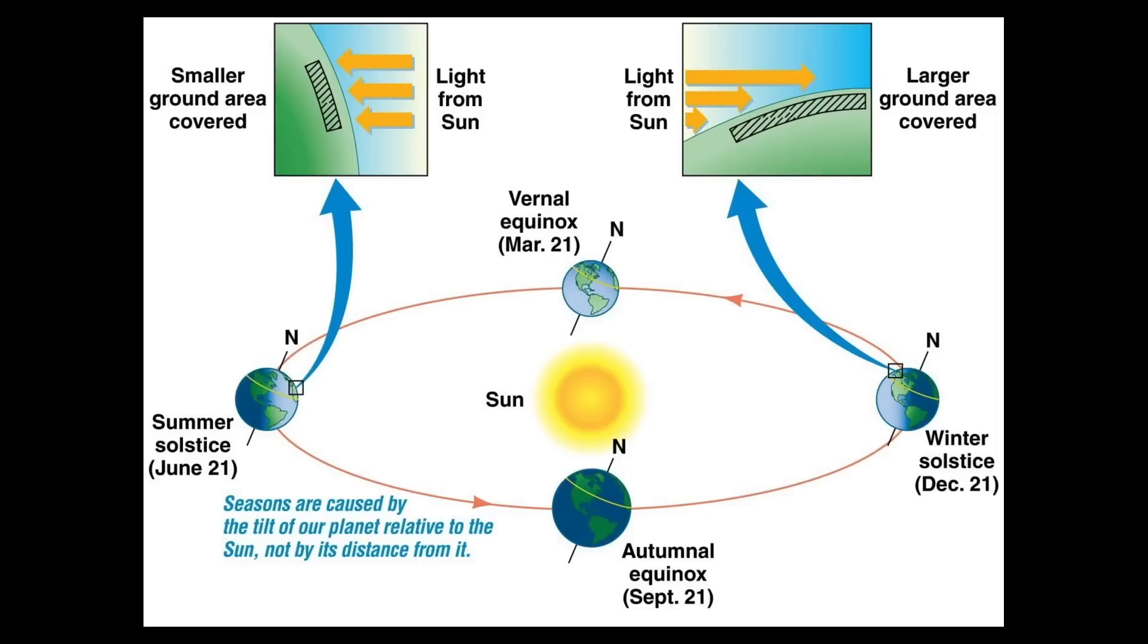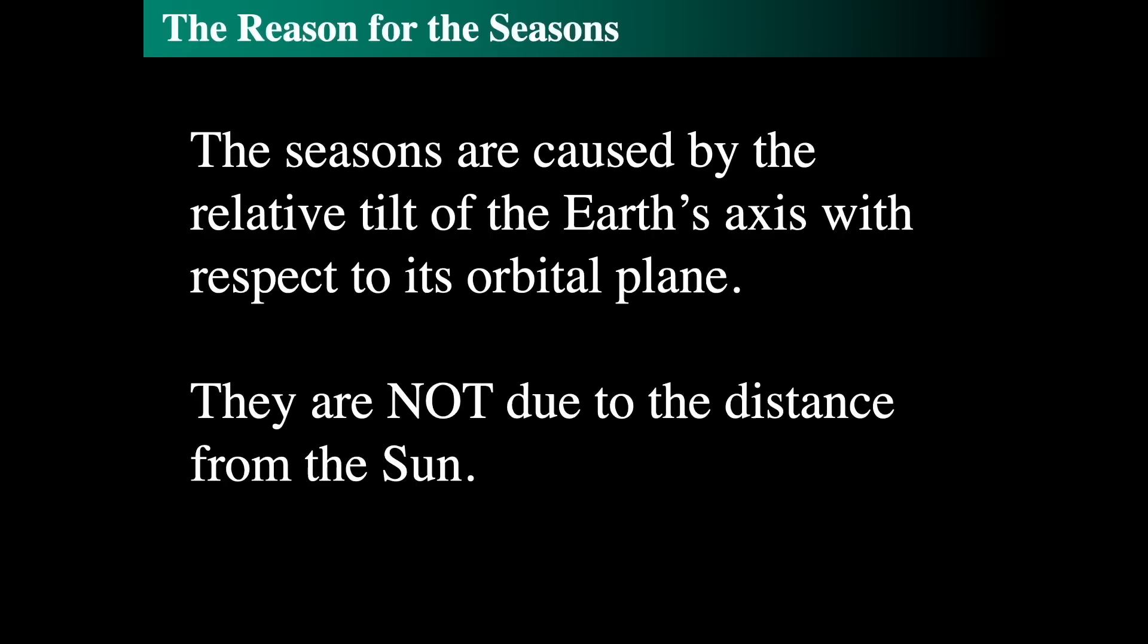It is not due to the distance between the Earth and the Sun. In fact, we are closer in the northern hemisphere to the Sun during the winter than we are at summer, and that's the nature of the ellipticity of the Earth's orbit, which is very small. So if it were about the distance, then we would be hotter in the winter. No, it's not. The angle of incidence of the Sun's light on the surface of the Earth drives everything. That's what we have as the reason for the seasons. They're caused by the relative tilt of the Earth's axis with respect to its orbital plane, and it's not due to the distance from the Sun.